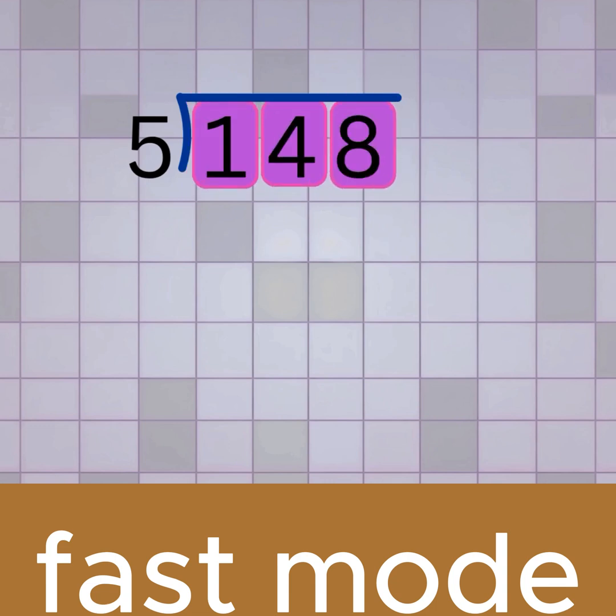Now we'll go digit by digit. We start with the first digit, which is 1. We ask, how many times does 5 go into 1? It doesn't, 5 is too big for 1, so we write 0 on top.